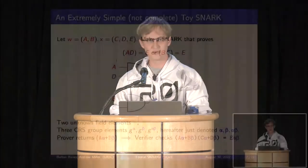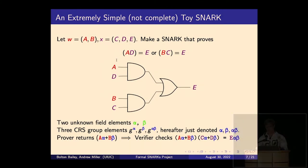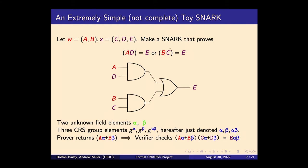To give a walkthrough, I've prepared an extremely simple SNARK. It's not really a SNARK because it's not even complete — it's not even possible for this SNARK to prove what it wants to prove. But it is definitely sound: it's not possible for the prover to trick the verifier. This is even more cut down than Groth16, even more cut down than BabySnark. We'll say there are two witness elements the prover knows, A and B, and the verifier knows three statement elements, C, D, and E.